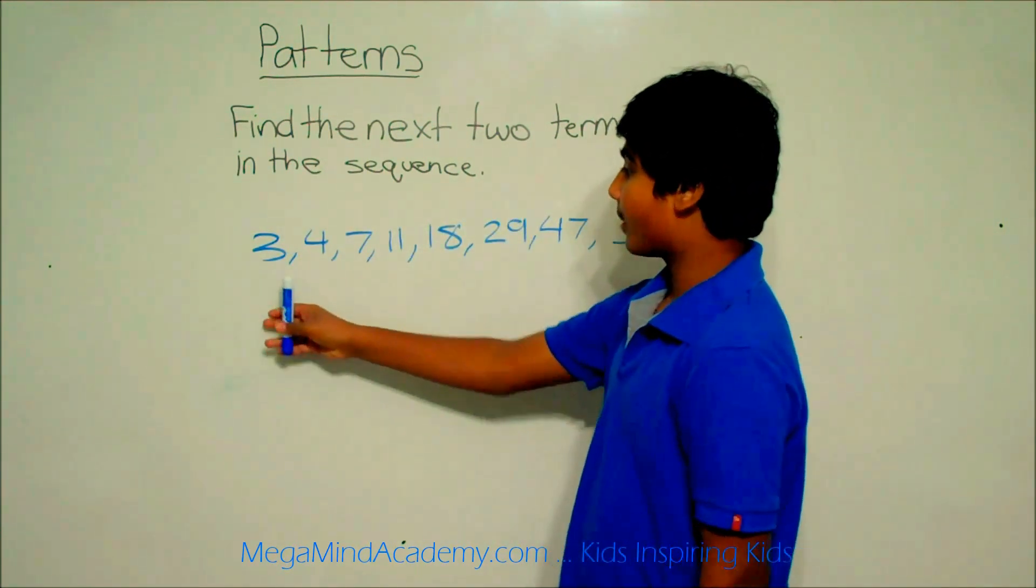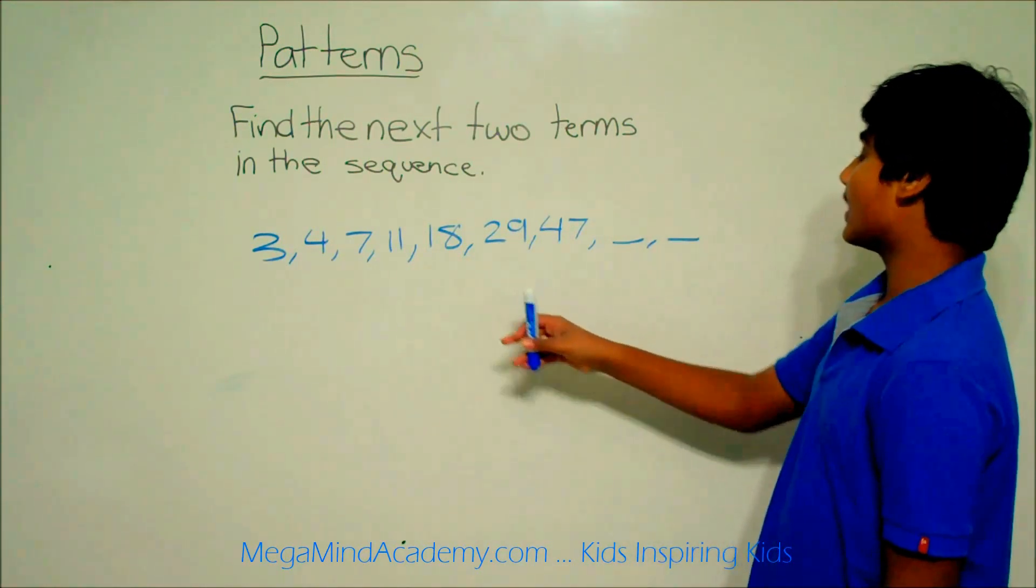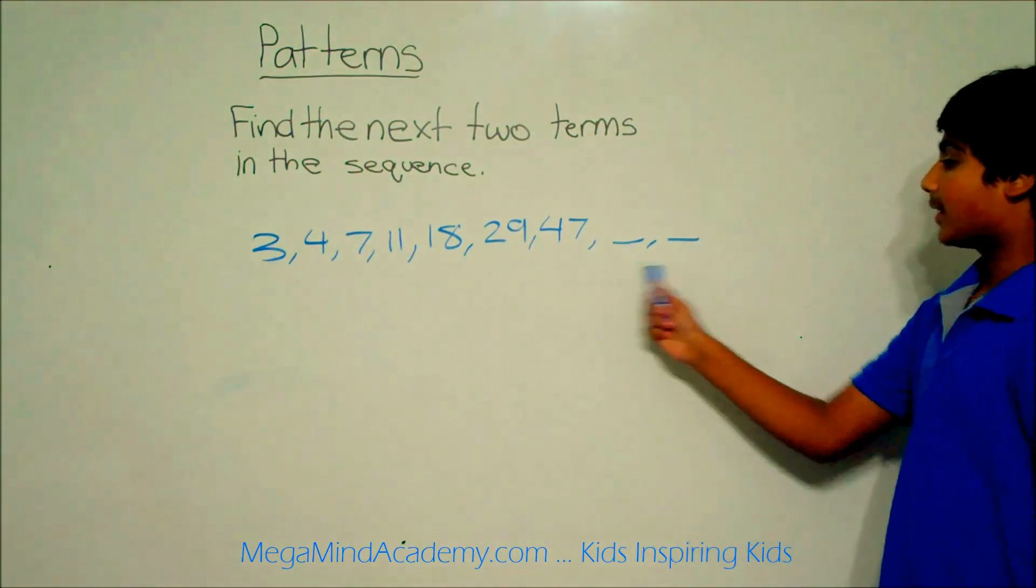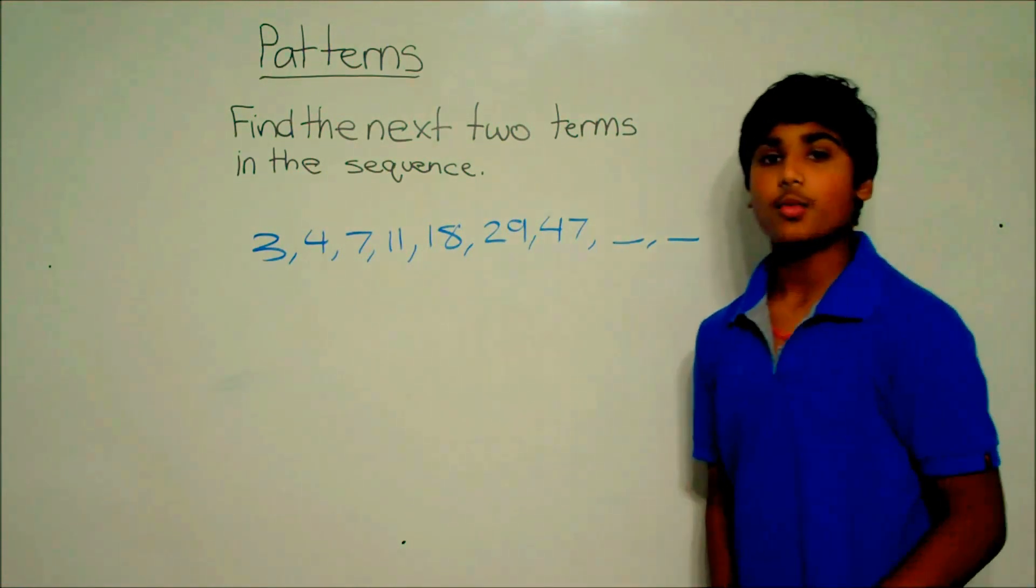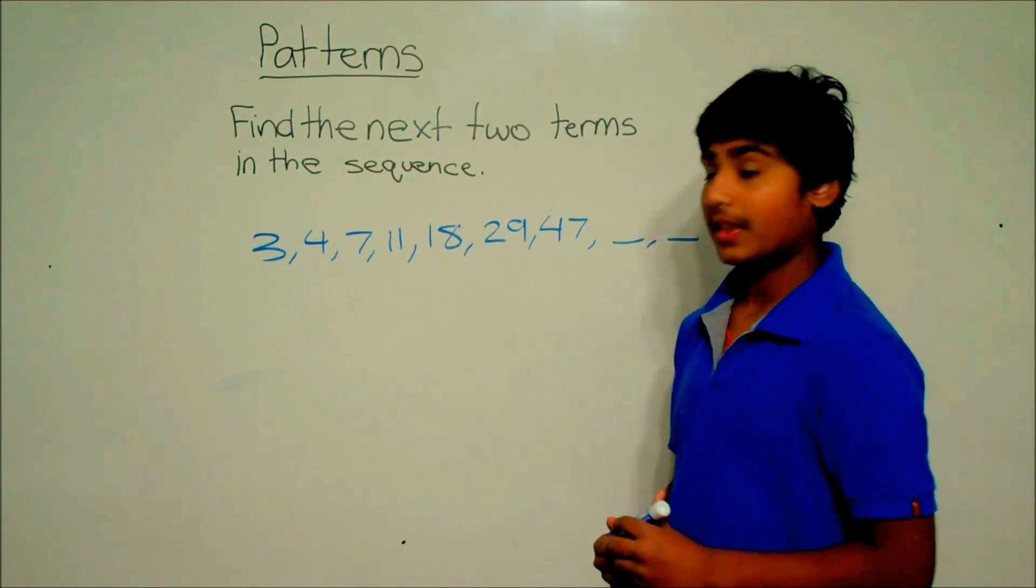Our sequence is 3, 4, 7, 11, 18, 29, 47. We have to find the next two terms, so we'll use inductive reasoning to solve this pattern.